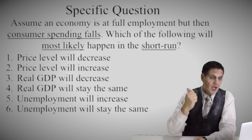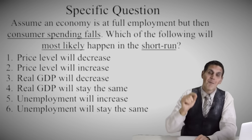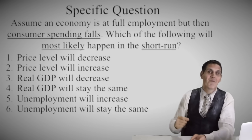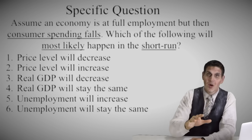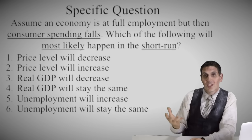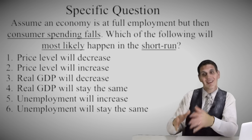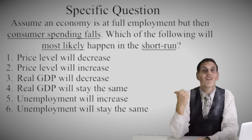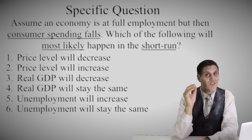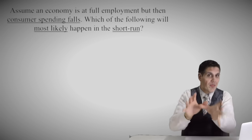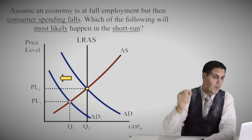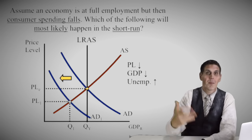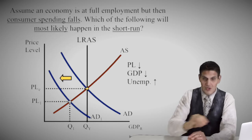Here's a specific question — looks very similar: assuming an economy is at full employment, but then consumer spending falls, which of the following will most likely happen in the short run? Pause the video and figure out the right answer. Since consumer spending fell, aggregate demand is going to fall, price level goes down, real GDP is going to go down, and unemployment is going to increase. There are going to be more people unemployed. Those are the right answers and there's no way of getting around it — it's not the long run because it says the short run.